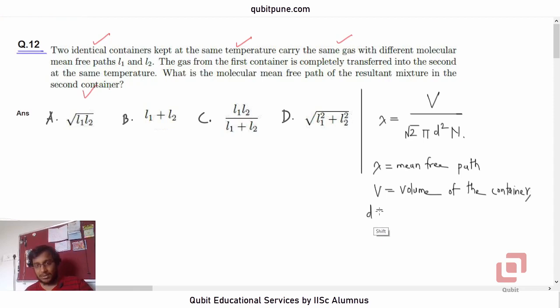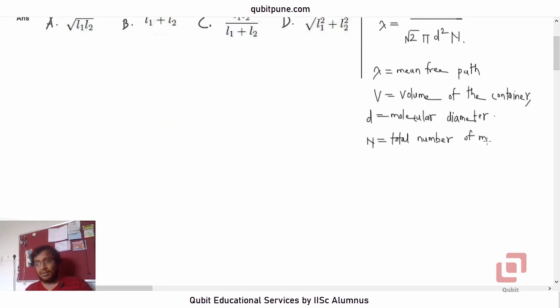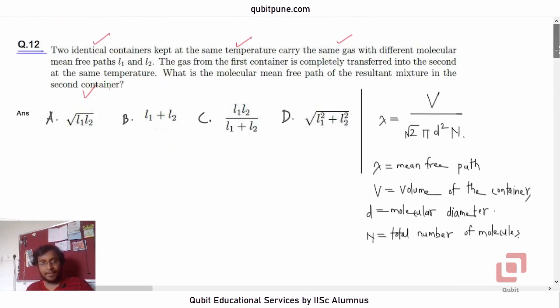D is molecular diameter, and capital N is the total number of molecules. This formula is what we will be using here.